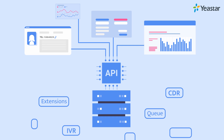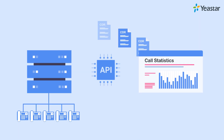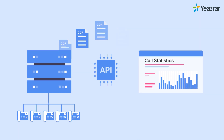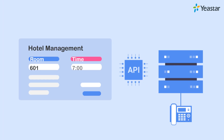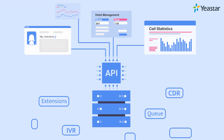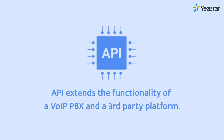Here are some more applications. Call statistics can be synchronized to a call center system to generate reports. A receptionist can set up a wake-up call on a hotel management system and the room phone will ring at the scheduled time. Generally speaking, API makes it possible to create and combine numerous features of Yeastar's functionalities on Yeastar VoIP PBX and a third-party platform.